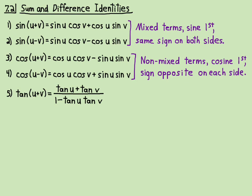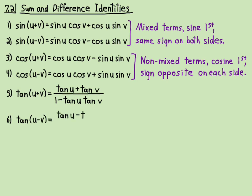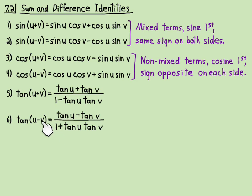Notice that on the left side there's a plus between u and v, and on the top of the right side there's also a plus. Then on the bottom, it's the opposite sign — it's minus. For the difference tangent identity, tangent of u minus v has a difference on top and the opposite sign, which is a plus, on the bottom. So the top has the same sign as between u and v on the left, and the bottom has the opposite sign.